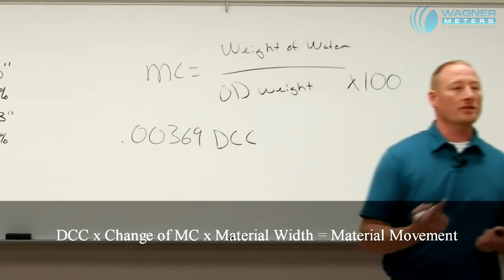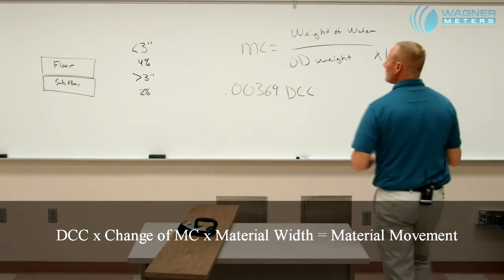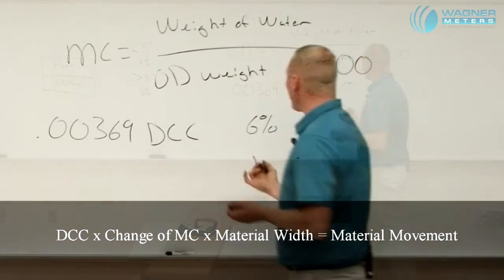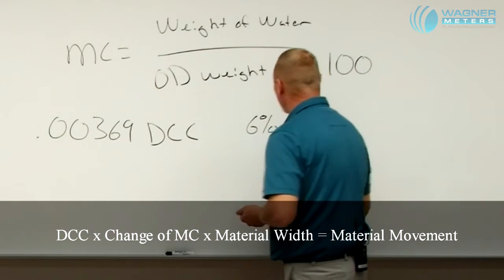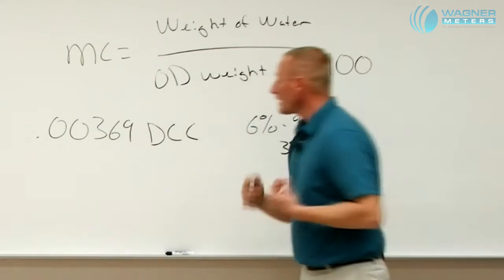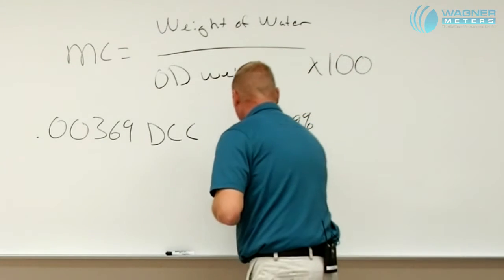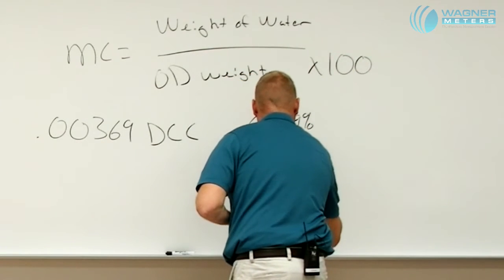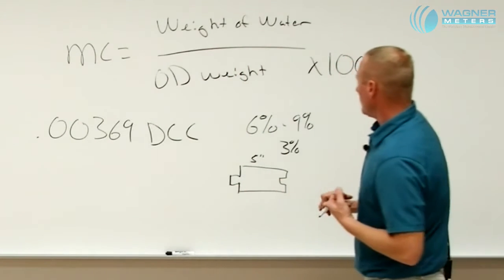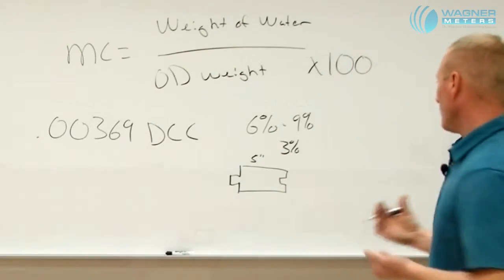If we have a change in moisture of 6% in the wintertime, and we change to 9% moisture content in the summertime, meaning we have a 3% change in moisture content. The next thing we need to know is, how wide is our material? So if we have a piece of flooring that is 5 inches wide, we can now determine how much that one piece of flooring will move.